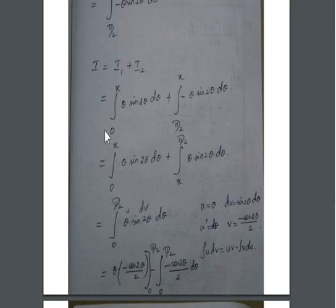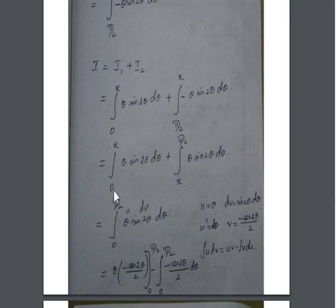Since x lies between 0 and π/2, the two integrals from 0 to x and from x to π/2 share the same integrand θ sin 2θ and together cover the full interval 0 to π/2. Just as an integral from 1 to 2 plus one from 2 to 7 equals one from 1 to 7, we combine them into a single integral from 0 to π/2 of θ sin 2θ dθ.